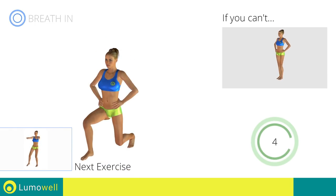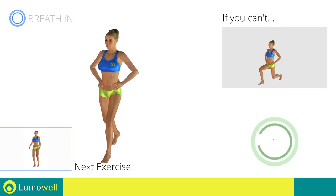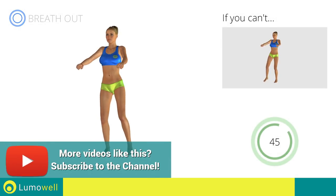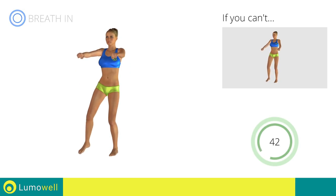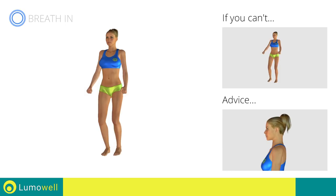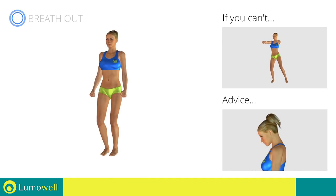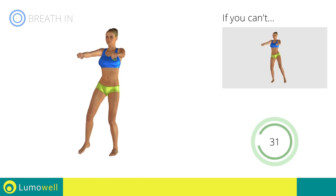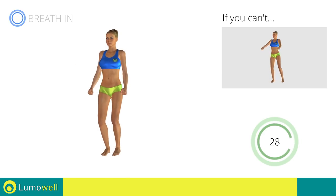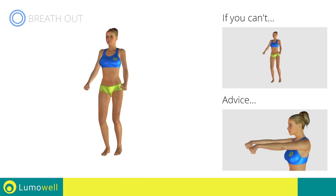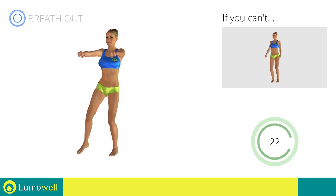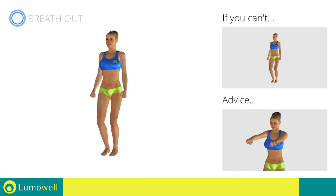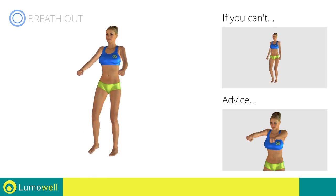Next exercise: sidestep plus front raises. Go! If you cannot do it, try slowing down the pace. Don't bend your head — keep it constantly in line with your back; try staring at a fixed point. Be sure not to bend your wrist — your hands should be in line with your forearms. Don't lift your shoulders when you bring your arms up — keep them down and relaxed.